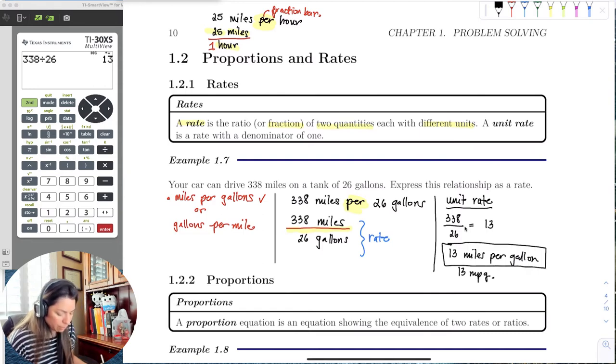So for every gallon you're going 13 miles. Not bad, right? Okay, I can do that. Well, then how do we take this one step further? We take these rates and construct proportions so we can find maybe a missing parameter.